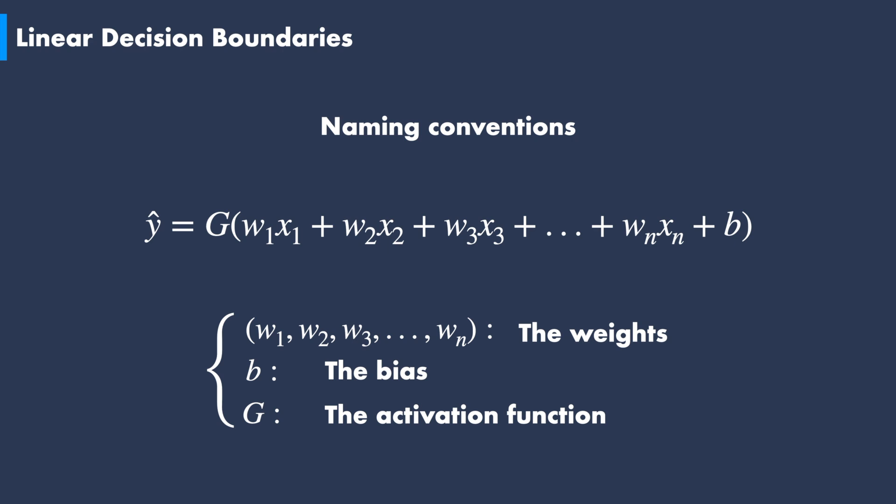In broad terms, the role of an activation function is to transform the values from the decision boundary formula into a series of probabilistic values. These values are zero or one in the case of binary classification, but they can be a longer series of probabilistic values for non-binary classification problems, which we will cover in the next video.